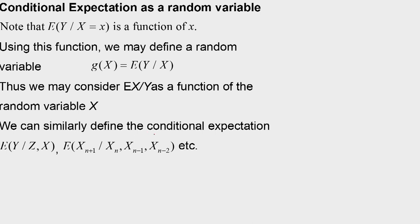We can similarly define conditional expectation of a random variable given multiple random variables. For example, E[Y | Z, X], or E[X_{n+1} | X_n, X_{n−1}, X_{n−2}, ...] etc. These definitions are important for us.